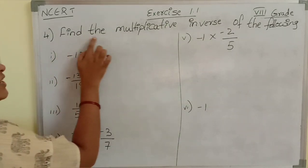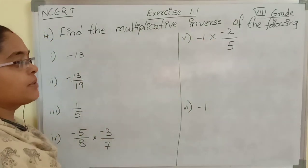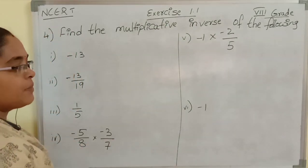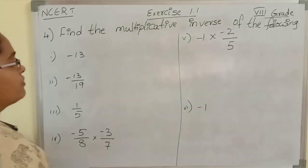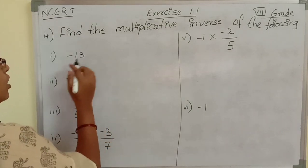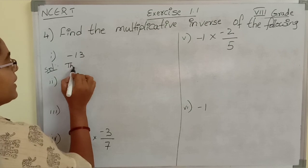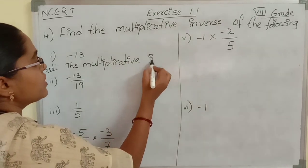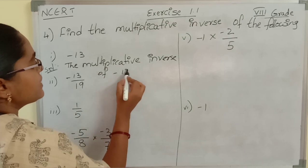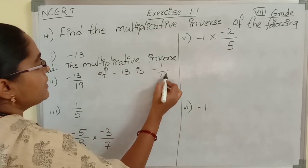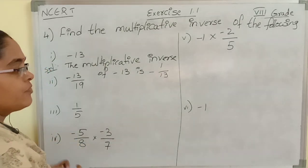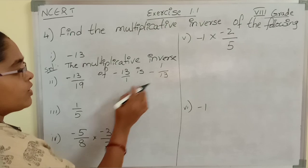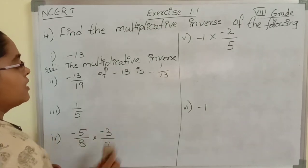Now see the fourth roman: find the multiplicative inverse of the following. What is multiplicative inverse? The reciprocal of the rational number — the reverse of the rational number — is nothing but the multiplicative inverse. See the first one: minus 13. The multiplicative inverse of minus 13 is minus 1 by 13. We won't change any sign. Minus 13 is nothing but minus 13 by 1, and its reciprocal is minus 1 by 13.